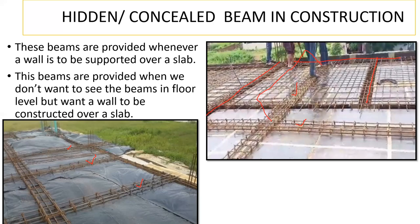We always go with a regular beam, which is also the right way of practicing. Hidden and concealed beams are usually seen in local construction. For example, consider a small ground-floor or G+1 house with no engineer involved — the contractor himself takes the decision, and in that case you find this kind of hidden beam.